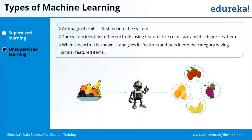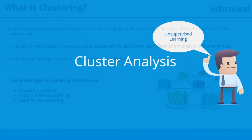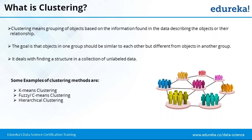If there are any questions, please message in the chat and I'll respond. That covers a brief about what machine learning is and the types — primarily supervised and unsupervised learning. Let's move ahead into cluster analysis. Clustering primarily means grouping objects based on information found in the data describing the objects or their relationships. We have a set of data and try to group and classify them.